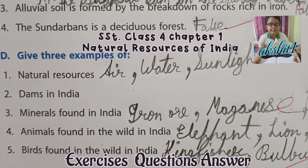Fourth, animals found in the wild in India — elephant, lion, tiger. Fifth, birds found in the wild in India — kingfisher, bulbul, peafowl.